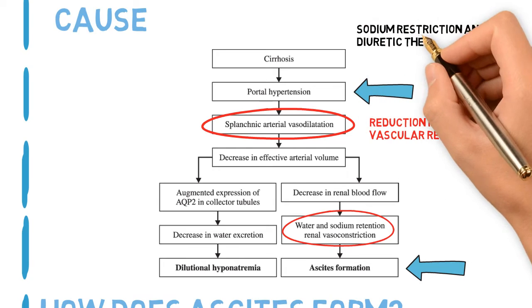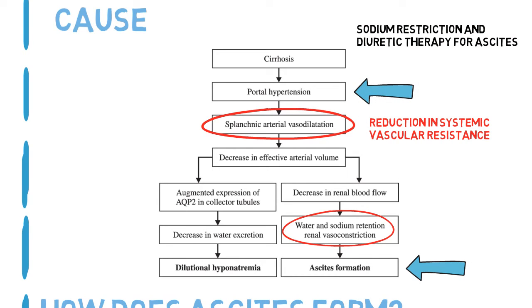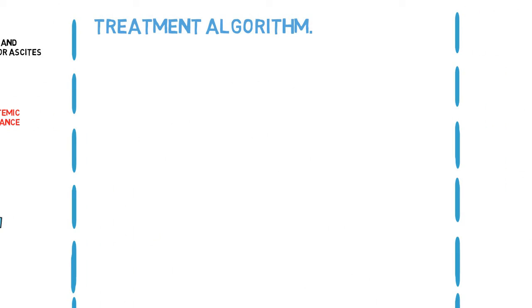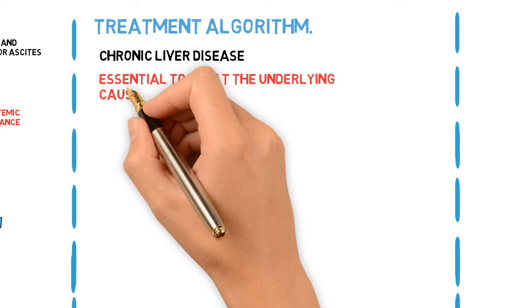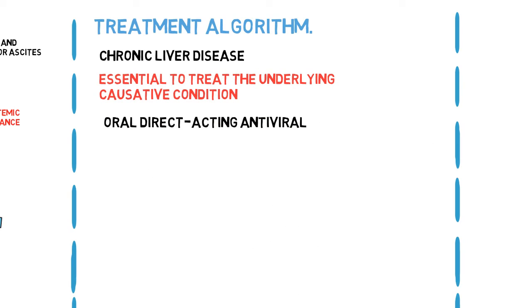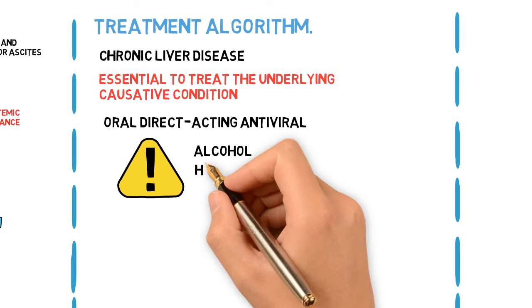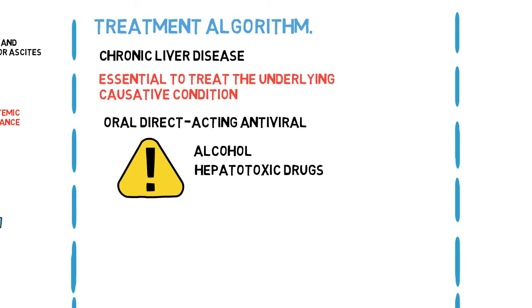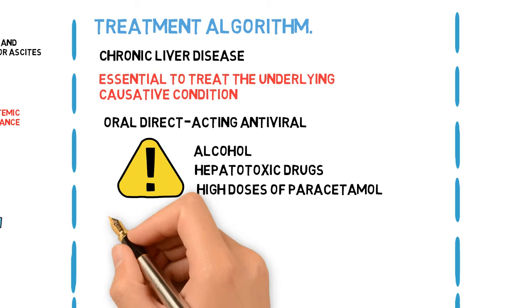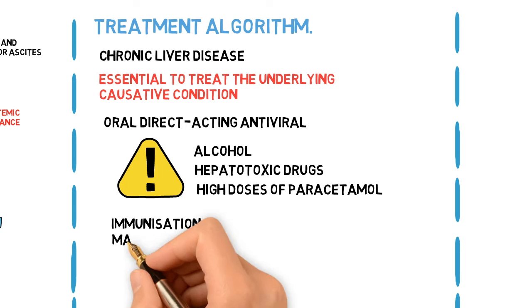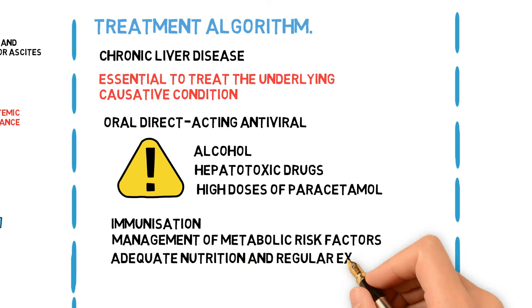Sodium restriction and diuretic therapy are used for ascites. Ascites is the most common complication of cirrhosis. Treatment algorithm: as cirrhosis is the pathological end stage of any chronic liver disease, it is essential to treat the underlying causative condition. Oral direct-acting antivirals are considered first-line treatment for chronic hepatitis C virus infection; regimens depend on genotype and presence or absence of cirrhosis. Superimposed hepatic insult may be prevented through avoidance of alcohol and other hepatotoxic drugs (e.g., NSAIDs and high doses of paracetamol >2g/day), immunization against hepatitis A and B for susceptible patients, management of metabolic risk factors, maintenance of adequate nutrition, and regular exercise.